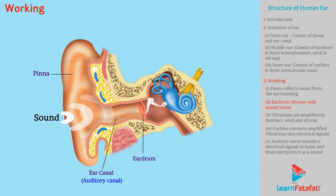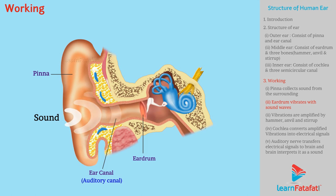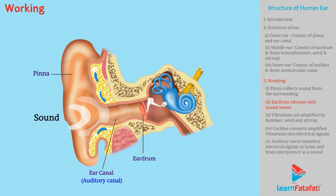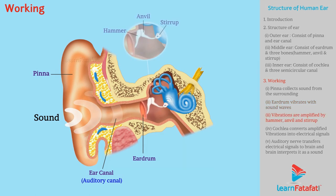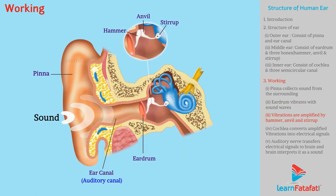During rarefactions, the eardrum moves outward. Hence, there is vibration of the eardrum. These vibrations are amplified by the hammer, anvil, and stirrup a number of times in the middle ear.